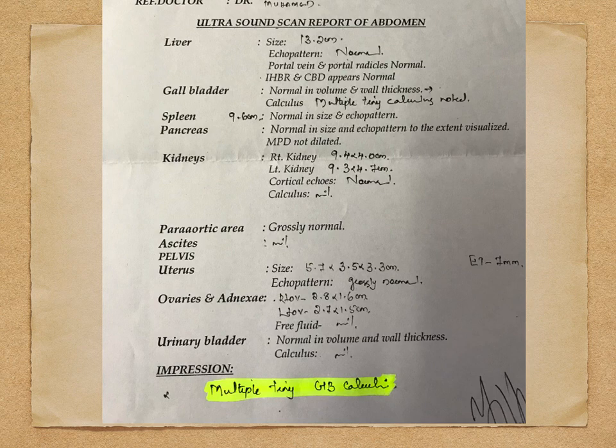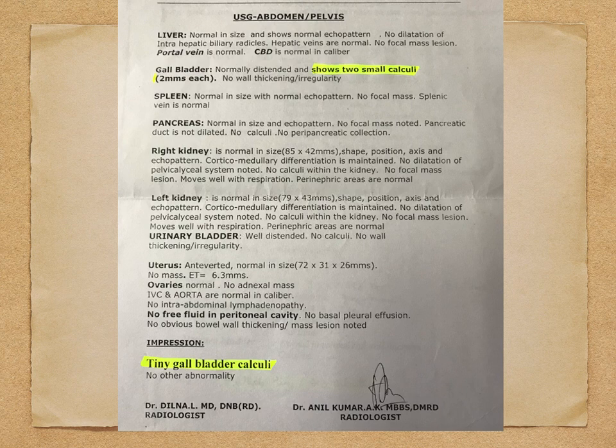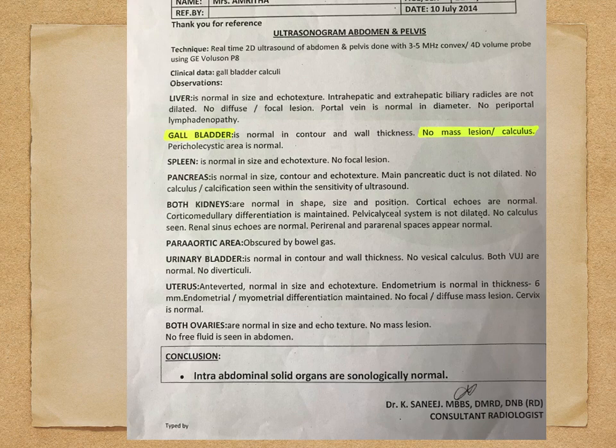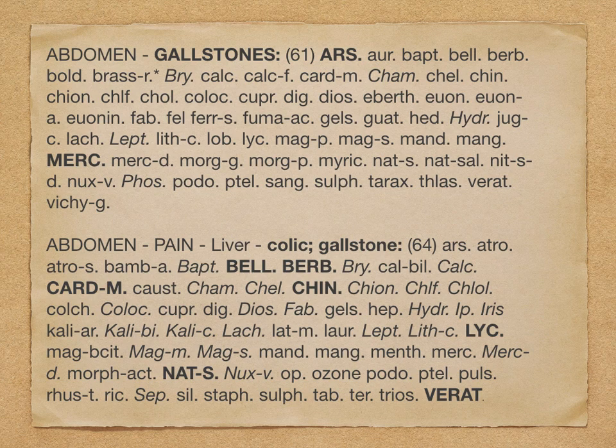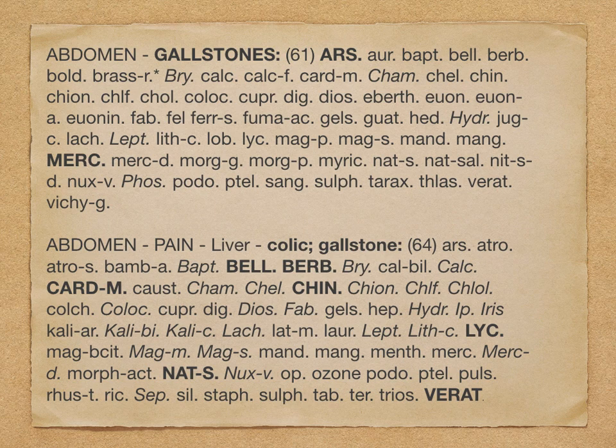Multiple gallbladder calculi can be easily managed with homeopathic remedy. Now the rubric for gallstones: there is a direct rubric in the chapter — Abdomen, gallstone — with Arsenicum album, Maxwell, etc., as remedies represented in the Complete Repertory by Rogov and Sanderwood. Then Abdomen, pain, liver, colic, gallstone — if there is severe pain, we work out this rubric also.